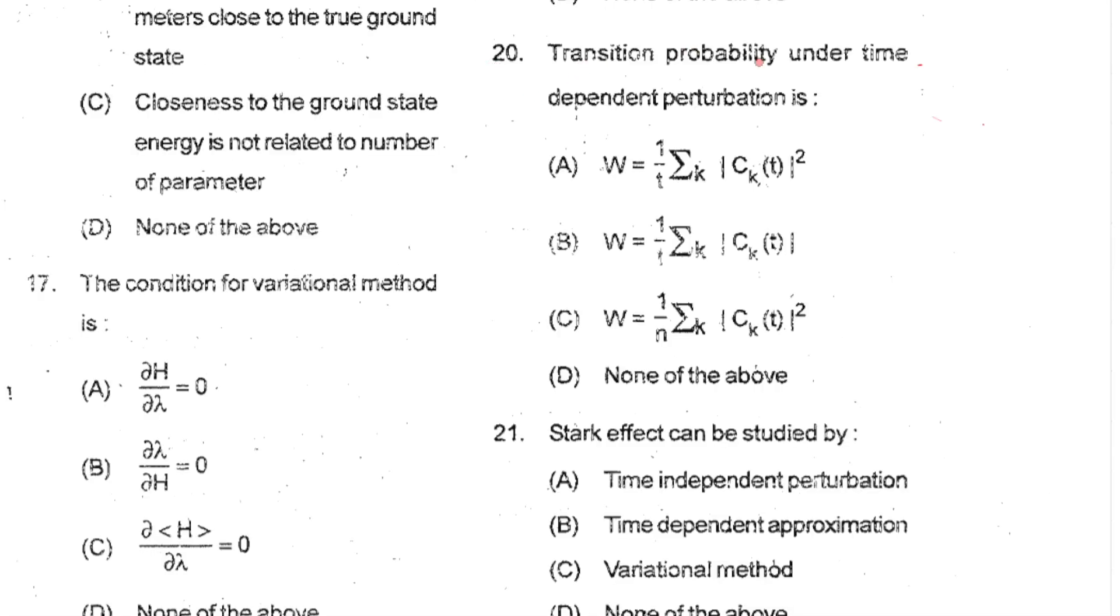Question number 20: Transition probability under the time dependent perturbation. The transition probability for unit time is proportional to the matrix element of the perturbation between the initial and final state, with the density of final state also influencing the probability. So that expression will be option C.